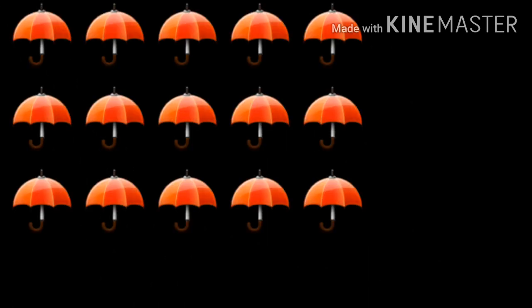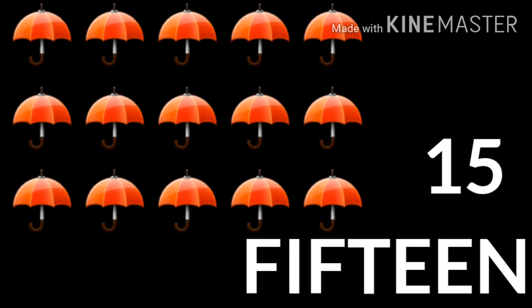Children, how many umbrellas are there? Let's count: 1, 2, 3, 4, 5, 6, 7, 8, 9, 10, 11, 12, 13, 14 and 15. Yay! How many umbrellas are there? There are 15 umbrellas. See number 15. And the spelling is F-I-F-T-E-E-N. 15.